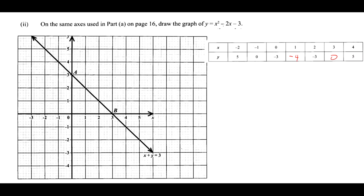On the same axes we draw the graph using all the table points: (minus 2, 5), (minus 1, 0), (0, minus 3), (1, minus 4), (2, minus 3), (3, 0), and (4, 5). We know we are supposed to get a quadratic curve, so yours should be drawn as a smooth curve on graph paper.